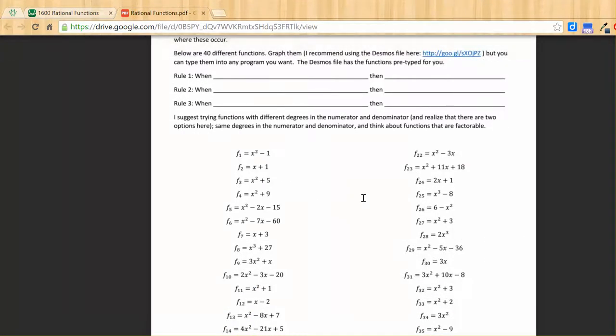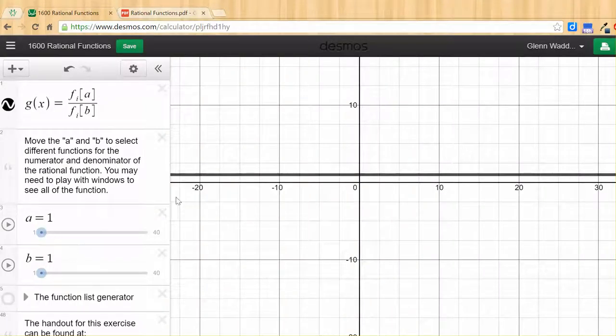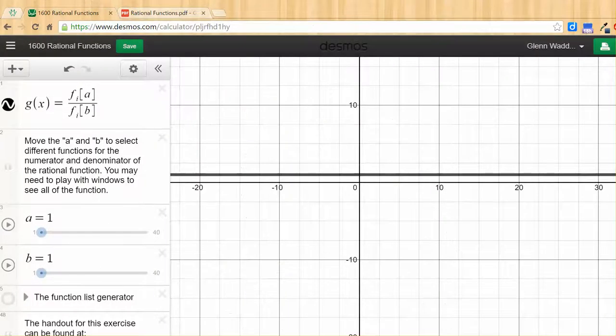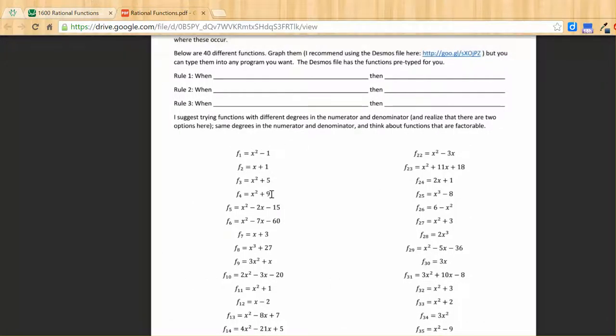So I will tell you there are 40 rational functions here. And on these 40 rational functions, for instance, f sub 1, the first one is x squared minus 1. So in this case right here, this is x squared minus 1 divided by x squared minus 1. So as you're working on this, you're going to want this paper handy, which is also why it's linked to in the document. It's a very important piece of paper to have here. Because we need to see what's going on with our functions.